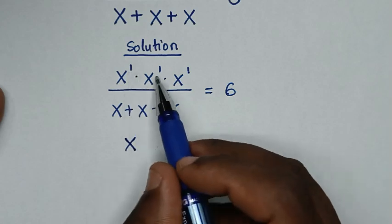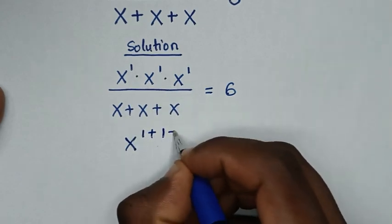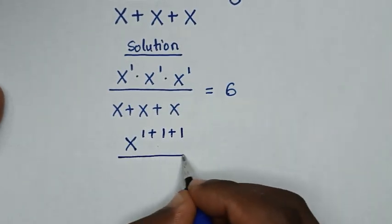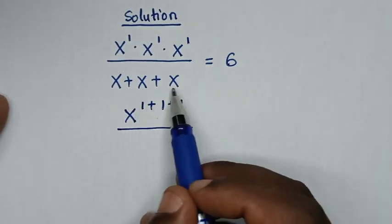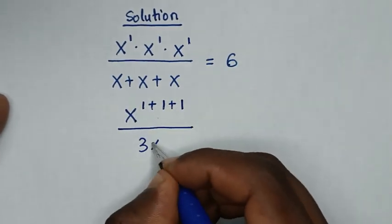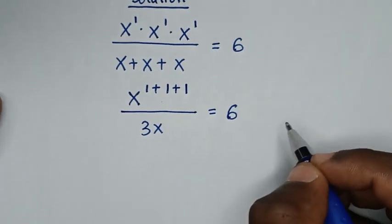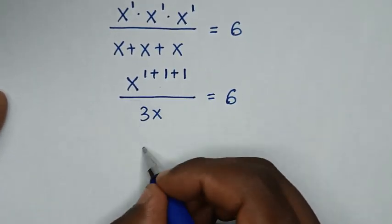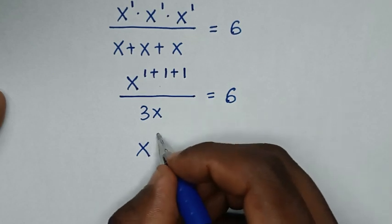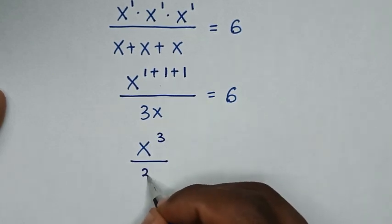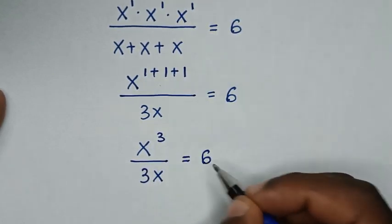We add the powers, so it will be 1 plus 1 plus 1. And the denominator x plus x plus x is 3x, which is equal to 6. So it will be x power 1 plus 1 plus 1, which is 3, over 3x is equal to 6.